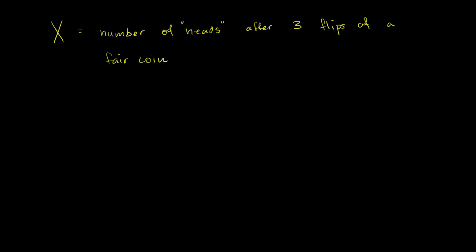Let's say we define the random variable capital X as the number of heads we get after three flips of a fair coin. Given that definition of a random variable, what we're going to try to do in this video is think about the probability distribution — what's the probability of the different possible values for this random variable — and we'll plot them to see how that distribution is spread out amongst those possible outcomes.